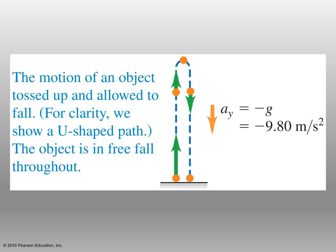The motion of an object tossed up and allowed to fall is free fall motion. When you throw a ball up, at first the velocity is fast — the vector is long. As it rises, the vector gets shorter, meaning it's slowing down. When it reaches maximum height, velocity is zero. Then it comes back down on its trajectory, first slow, then speeding up to reach its final position, tracing a u-shaped path throughout its entire trajectory.